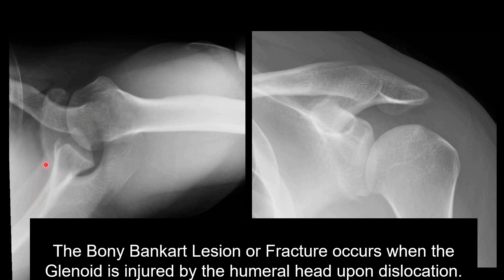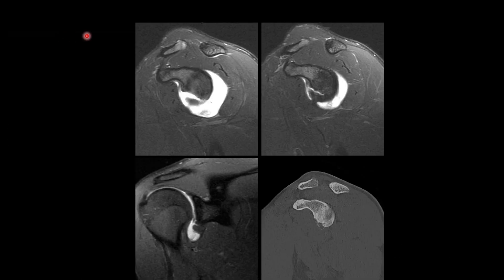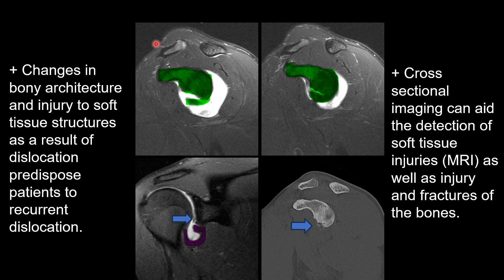In the same images without the overlay, we can see again this disruption of the anterior glenoid, as well as this disruption of the bony cortex. Here are some cross-sectional images of the shoulder to help demonstrate some of the things we've discussed in this video. Up top, we have two sagittal oblique views of the shoulder on T2-weighted MRI. On the bottom left, we have a coronal view of the shoulder on T2-weighted MRI, and in the bottom right, we have a sagittal oblique view of the shoulder on CT scan. Here's our clavicle, here's our acromion, and here's the glenoid, showing this large bony Bankart lesion on this image here, as well as this one.